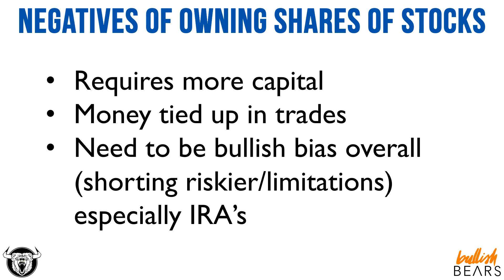The other issue is you need to be bullish-biased overall. You need the market to go up overall because shorting strategies are a lot riskier, and there are limitations especially with IRAs. With many IRAs or retirement plans, you're not allowed to short — you can't go short with many brokers. So you have to be bullish, or you need the market to go up. Your money's tied up and you can only go long.